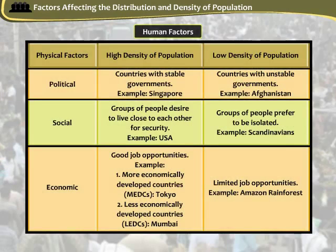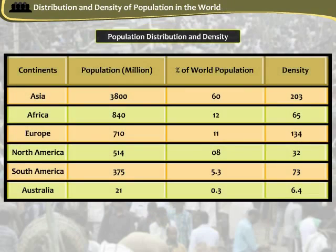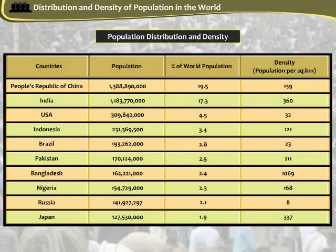Human factors that affect the density of population in three ways are political, social, and economic. The following table provides information related to population distribution and density based on the natural and human factors. The following table shows the distribution and density of population in the continents of the world. The following table shows population density in select countries across the world.